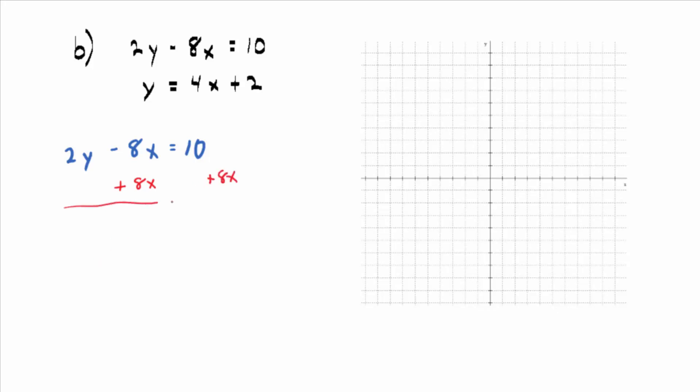Yeah, we'll add 8x. What does that give us? 2y equals 8x plus 10 is one way to write it. And then finally, to get y by itself, what do you do?